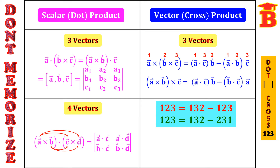Next formula: (A vector cross B vector) cross C vector. Here we have the bracket for the first two vectors A and B. For this, the formula is A·C times B minus B·C times A. And remember the technique: 1, 2, 3 equals 1, 3, 2 minus 2, 3, 1. Here 3 is the separate vector, so if we have the third vector as separate, use this technique.